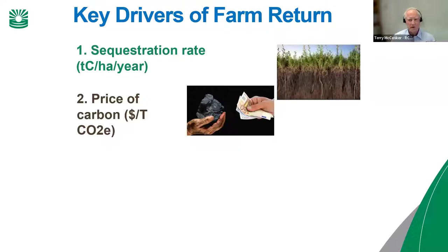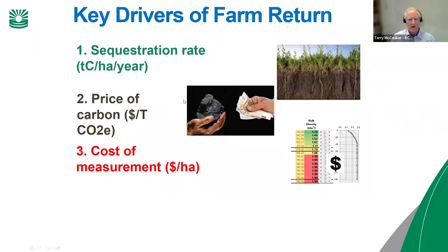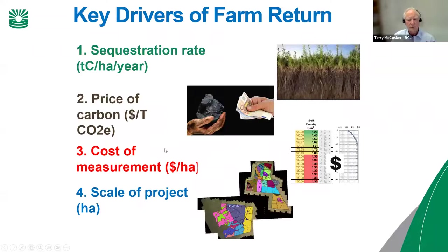The cost of measurement is actually a two-edged sword. You can go out and do measurements quite cheaply, but you run the risk of variability in the sampling wiping out any potential gains. There's a myth around the cost of measurement — the real cost comes from inaccuracy. If you've got a measurement system with high uncertainty, it has a major discount on all the carbon credits you're likely to receive over a 25-year period. Spending the money upfront and getting that baseline accurately done is quite important.